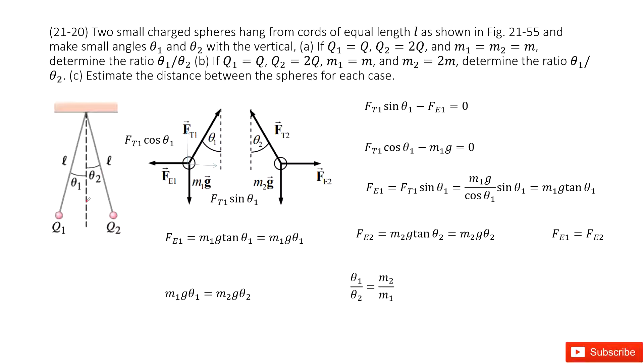So you can see we have two small charged particles q1 and q2 hanging from a fixed point with the same equal length L at small angles θ1 and θ2. Now we need to find the ratio of q1 to q2 in different situations.